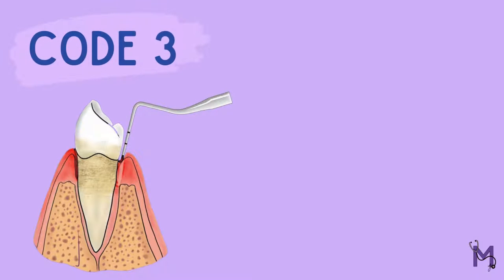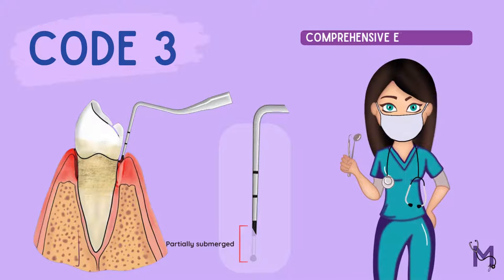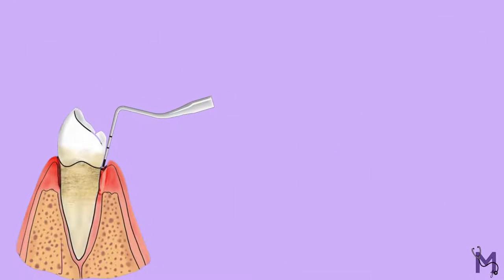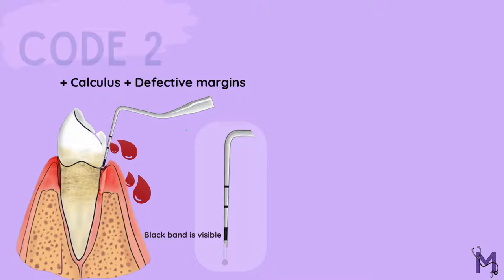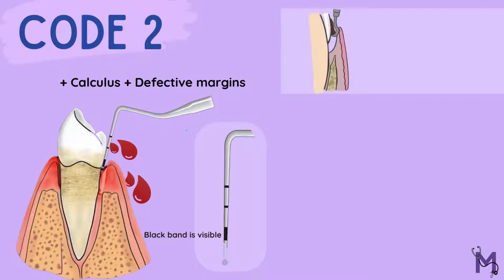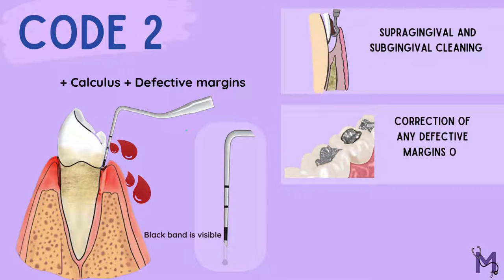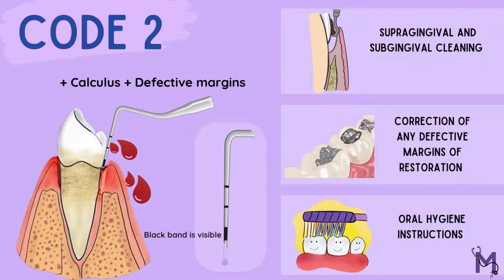A score of code 3 is given when the black band of the probe is partially submerged, and a comprehensive examination is needed in such cases. In cases where the black band is completely visible but there is presence of bleeding on probing along with calculus or defective margins, a score of code 2 is given. The treatment plan here would include supra-gingival and sub-gingival cleaning first, followed by the correction of any defective margins of restoration if present, as they could otherwise lead to plaque retention. Lastly, oral hygiene instructions are to be given to the patient to avoid the progression to a diseased condition.